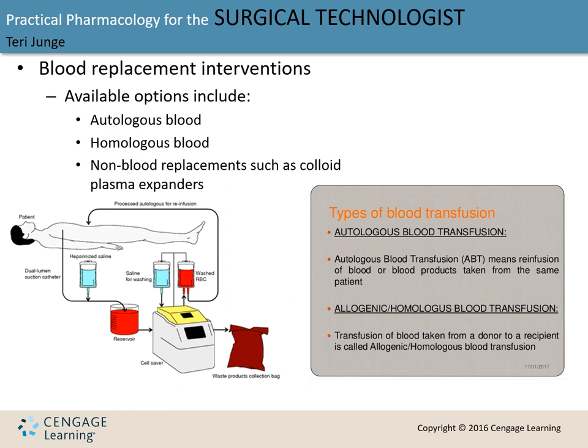If a hemolytic reaction is suspected, the blood transfusion should be discontinued immediately and treated accordingly — this is why the type and crossmatch is so important. The American Association of Blood Banks (AABB) sets the standards for collection, processing, storage, and transfusion of blood. Whole blood has had no portions removed and is good for patients with significant blood loss, helping restore blood volume quickly and maintain blood pressure.